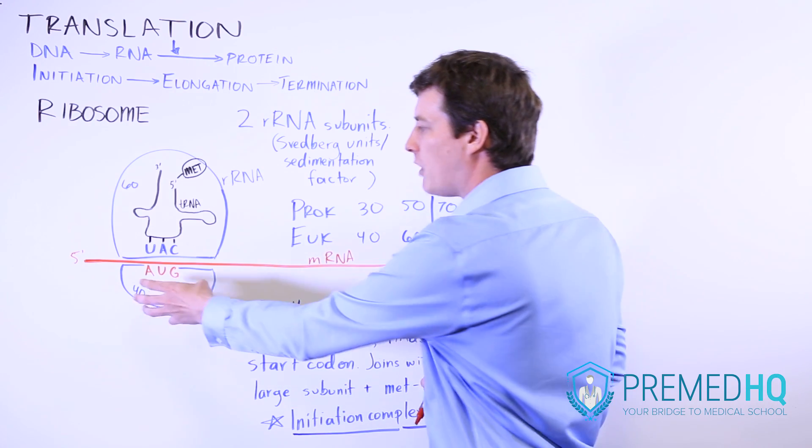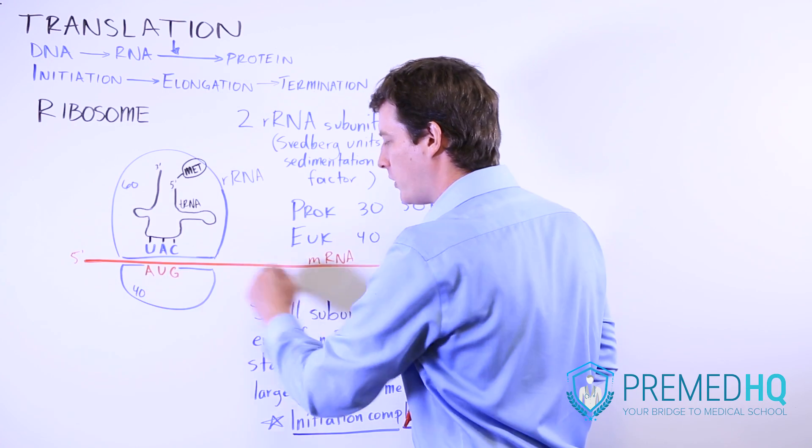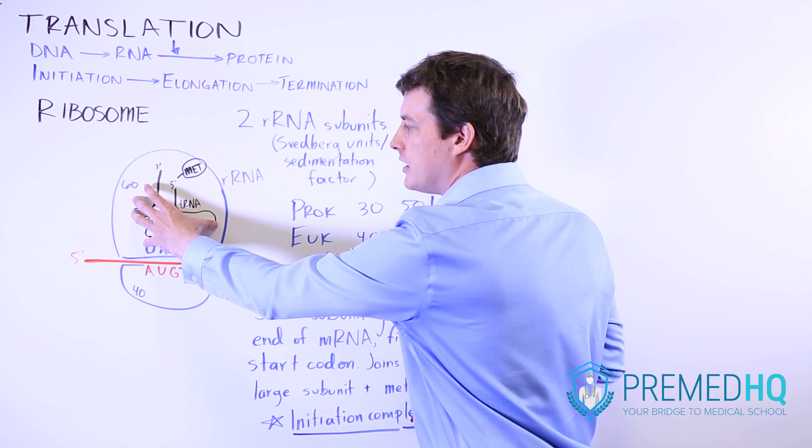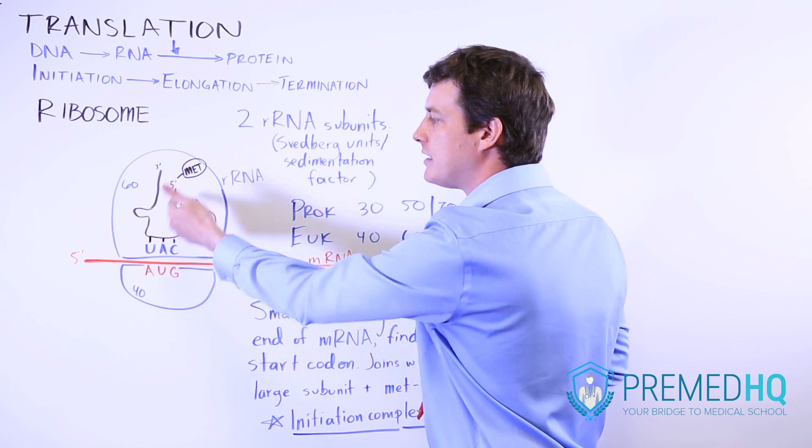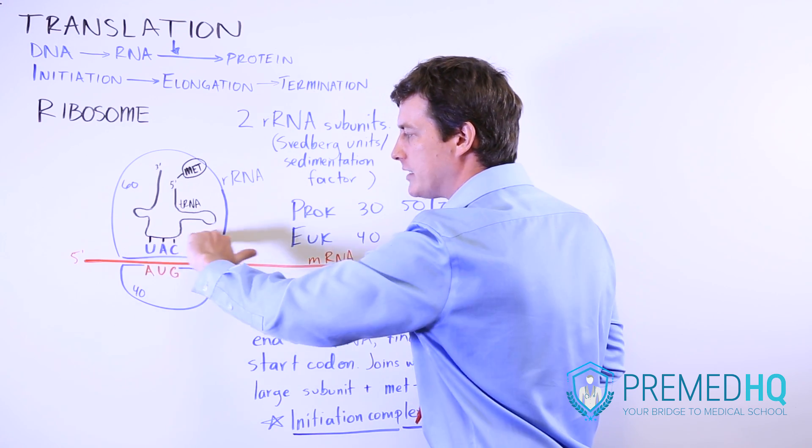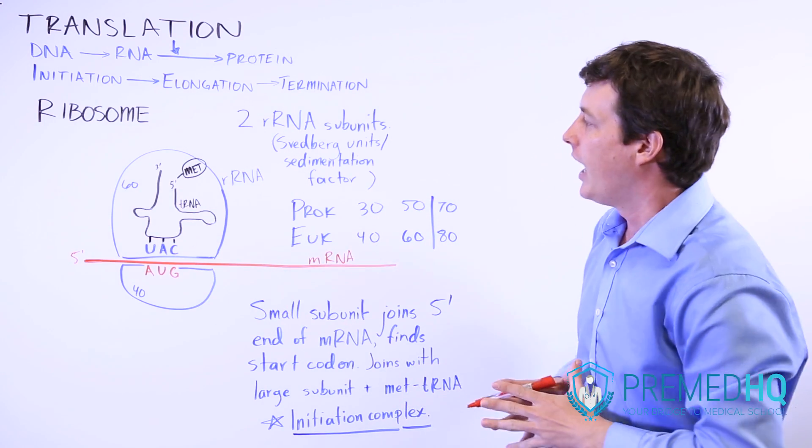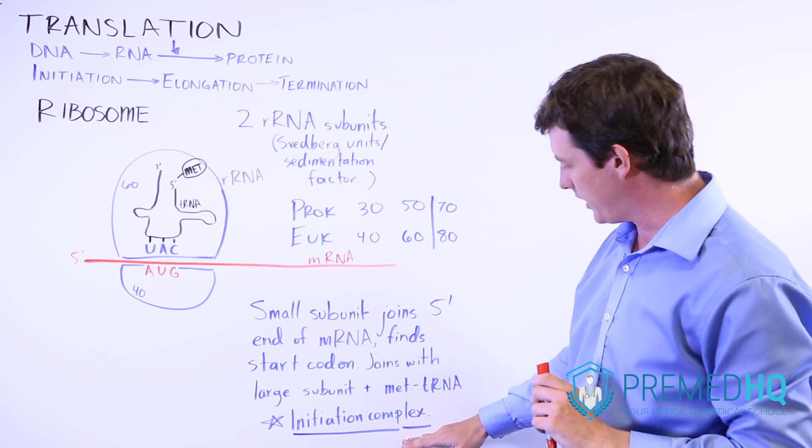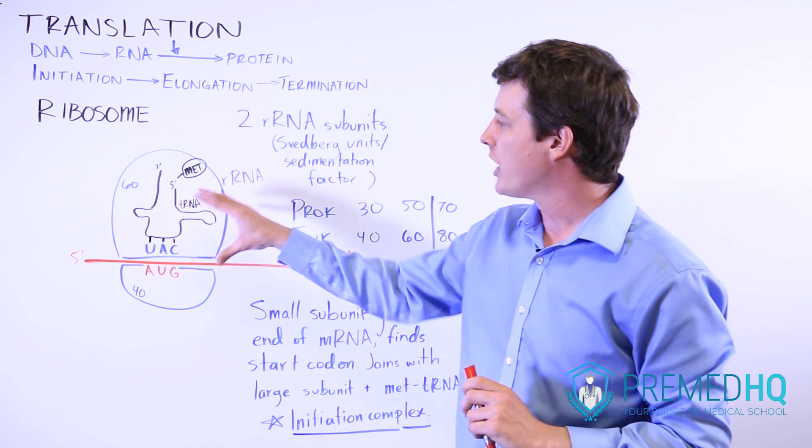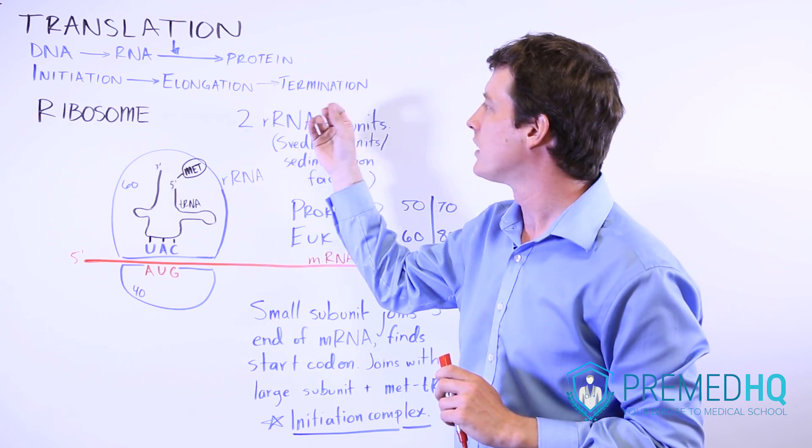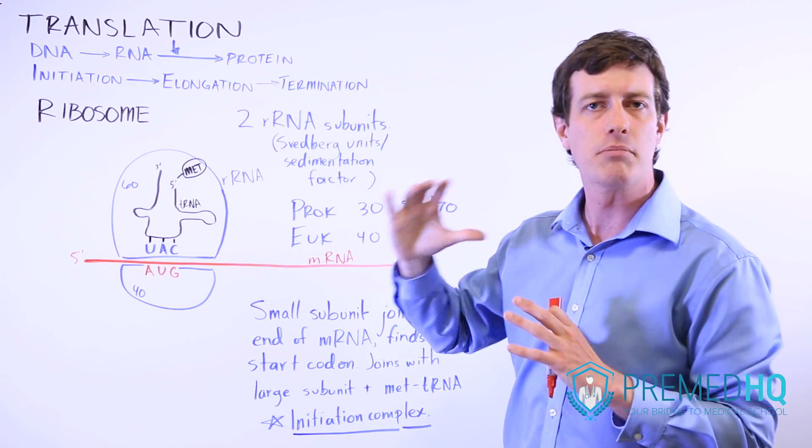The beginning, or the initiation process of translation, involves first the small subunit finding that start codon on the mRNA. Then this larger subunit joins, as does the tRNA coding for methionine that has the appropriate anticodon. Once this happens, you have what is known as the initiation complex. This establishes the ribosomal sites that we'll then use for the elongation process as we continue to build our polypeptide.